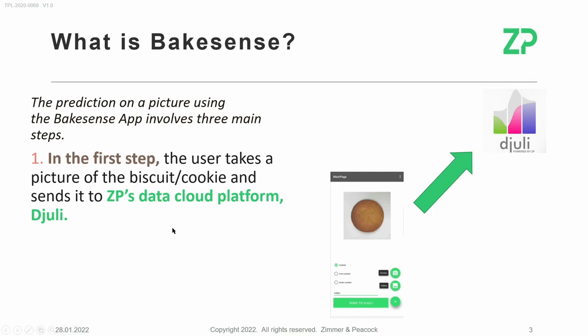The first step is that the user takes a picture of a biscuit or cookie and sends it to the cloud data platform, Julie. As you can see here, a picture is taken in the app and uploaded through the gallery or camera to the cloud, Julie.